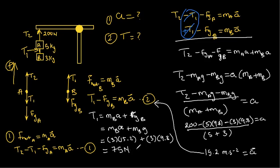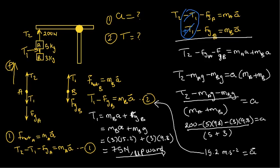If we're only looking at mass B, tension will be upward. That's how we work out Newton's second law problems where the force is acting vertically upward. If you liked this video and learned something useful, then subscribe, like, and get more videos like this.